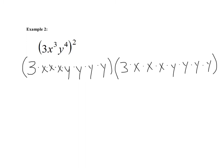When we look to simplify this, we're going to use the product rule. We take our coefficients — our 3s — and combine those. 3 times 3 is 9. Then we look at our x's: we have 1, 2, 3, 4, 5, 6 x's, so we'll have x to the sixth power.